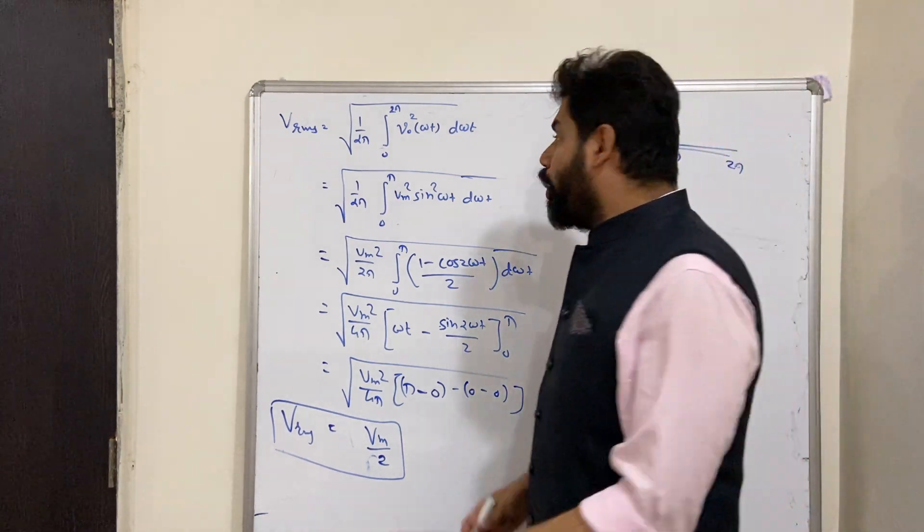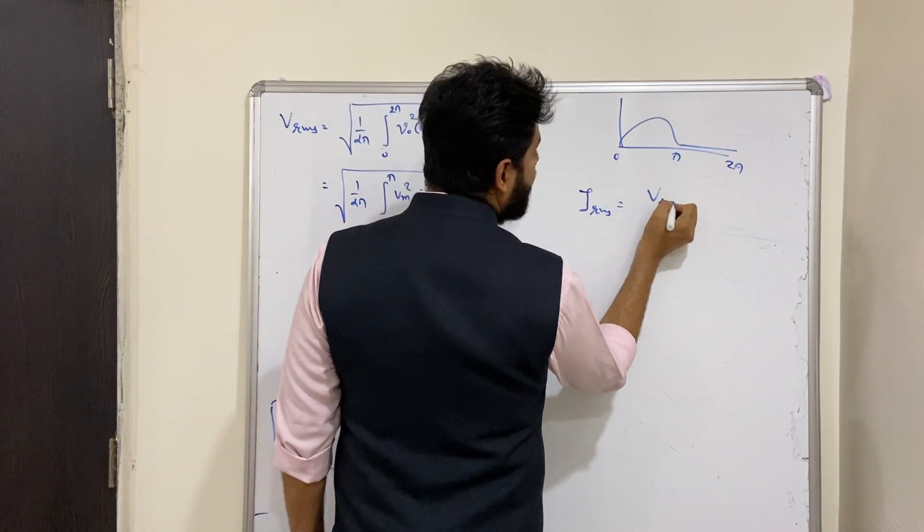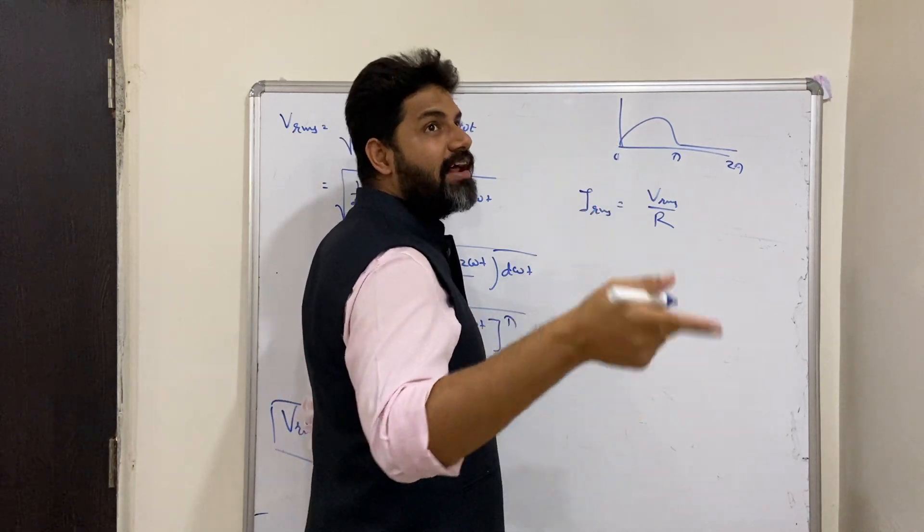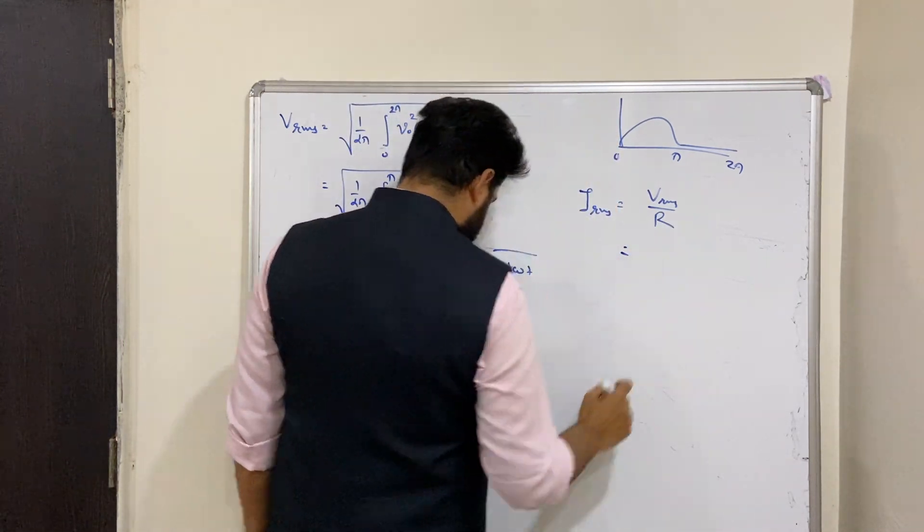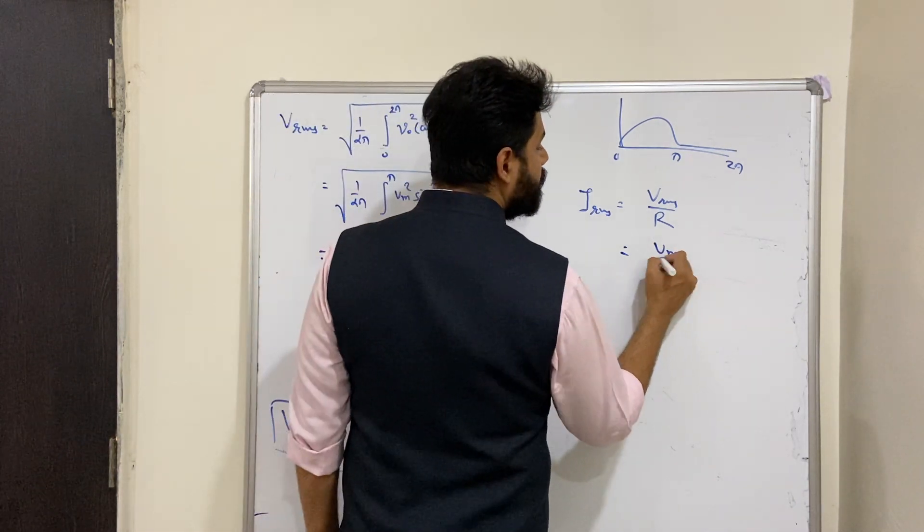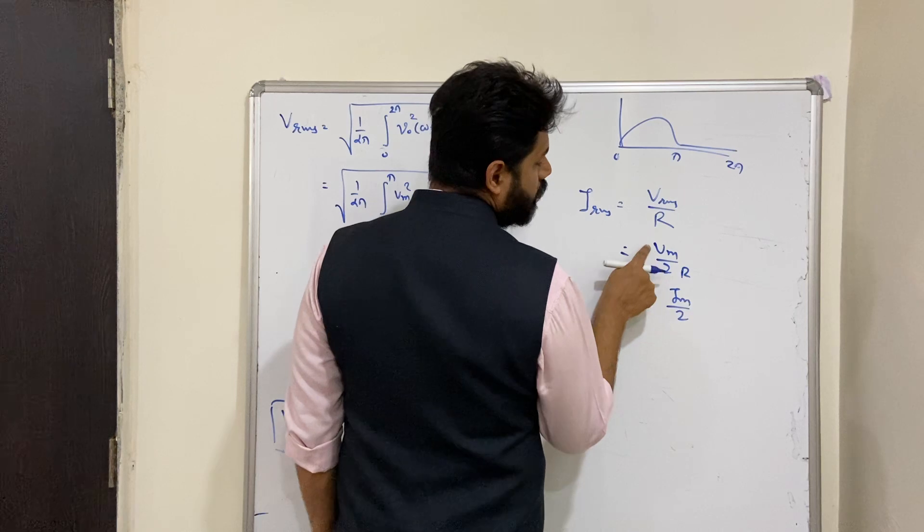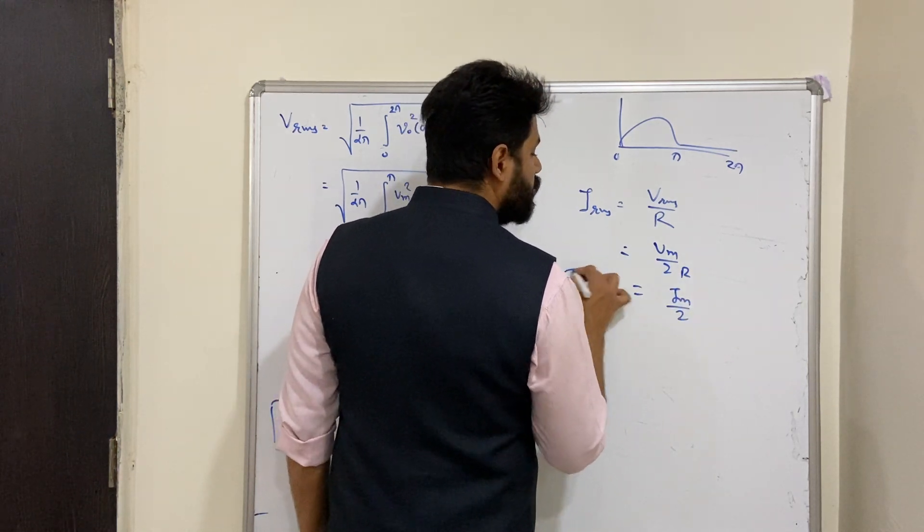So we have got this. Correspondingly, current: I RMS, which is equal to V RMS divided by total resistance, which is RL plus RF plus Rs. So we will be having RMS, which is Vm by 2, so it is Vm by 2 into R, which is Im divided by 2. So Vm by R is Im, and it is RMS. So RMS value, clear.